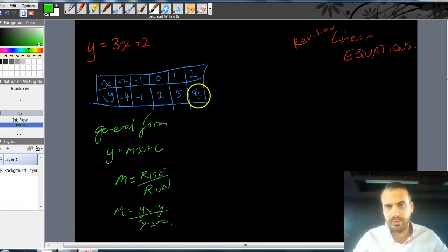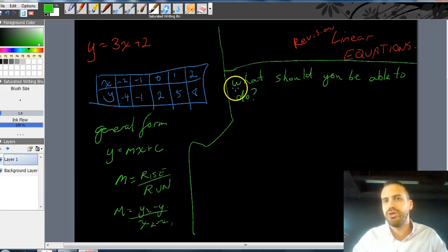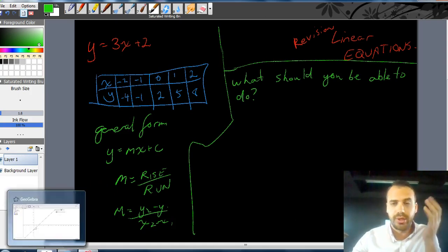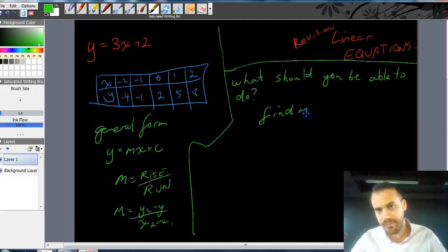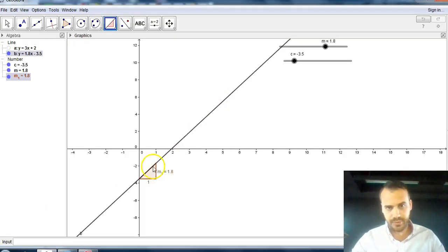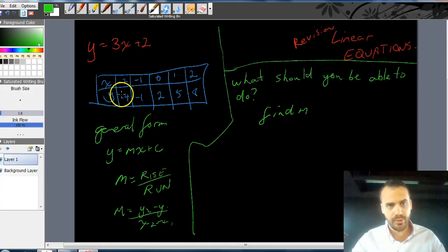Now, this is all revision, so I'm not doing examples. Now, I've written here, what should you be able to do? Well, right now, you should be able to do a couple of things. You should be able to look at any line, and you should be able to pretty quickly come up with what the gradient is. So, you should be able to find m. Whether it's in this form, or whether it's in this form, or even whether it's in this form, you should be able to find m.